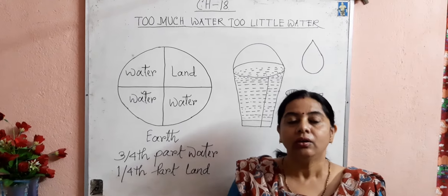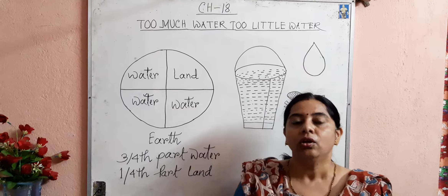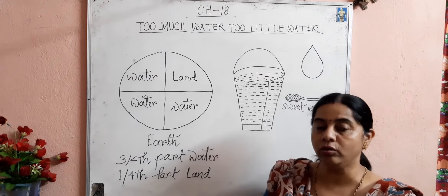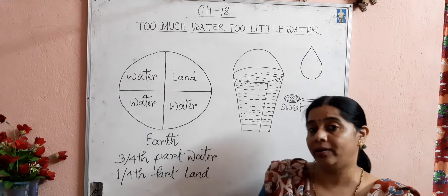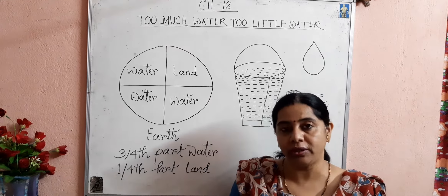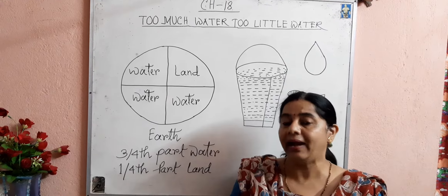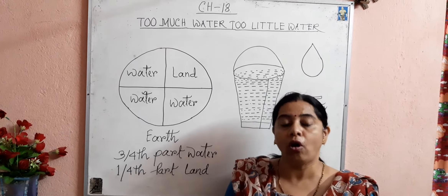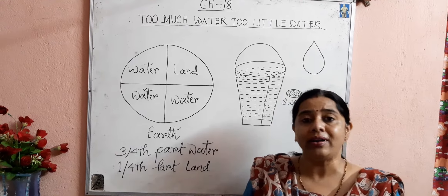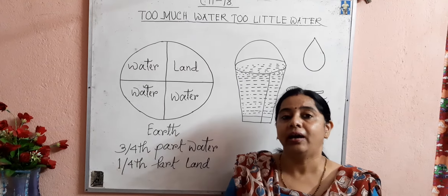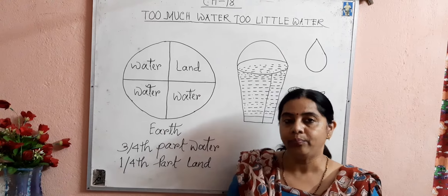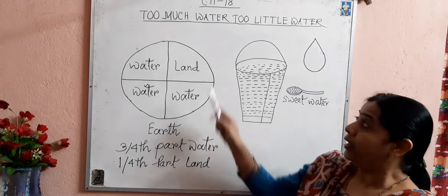Hello students, today we are going to learn chapter 18 of your Looking Around book. The topic is 'Too Much Water, Too Little Water.' In the previous classes, I discussed the three stories and about ORS. I hope all of you understood those stories and developed an idea about the importance of water and healthy drinking water. Today, let us discuss the topic further.